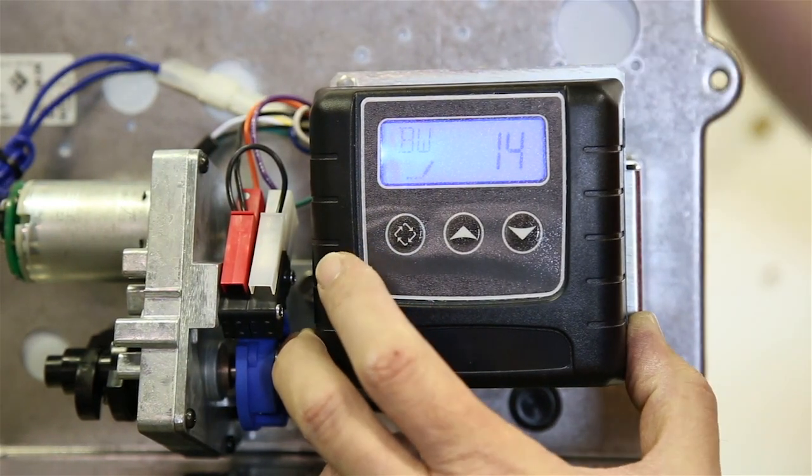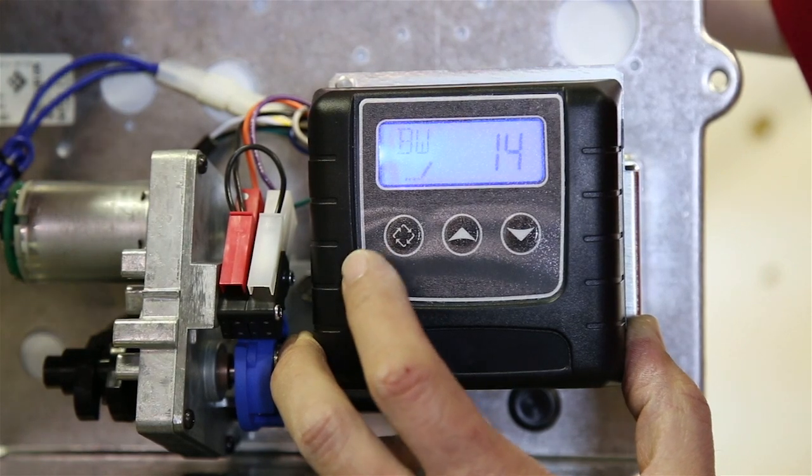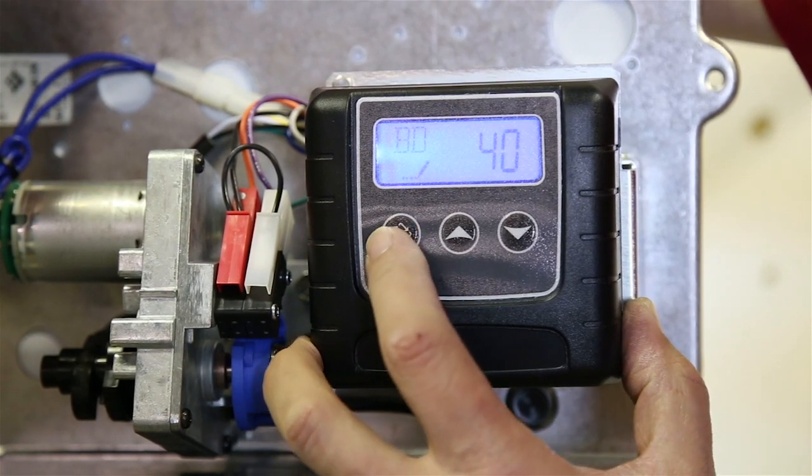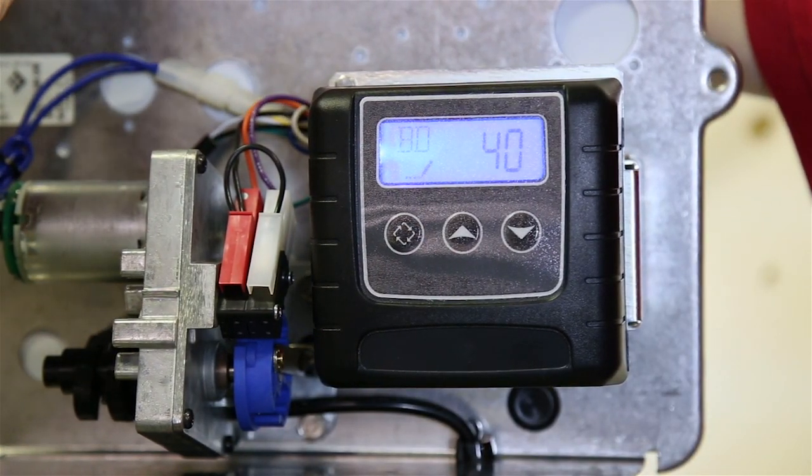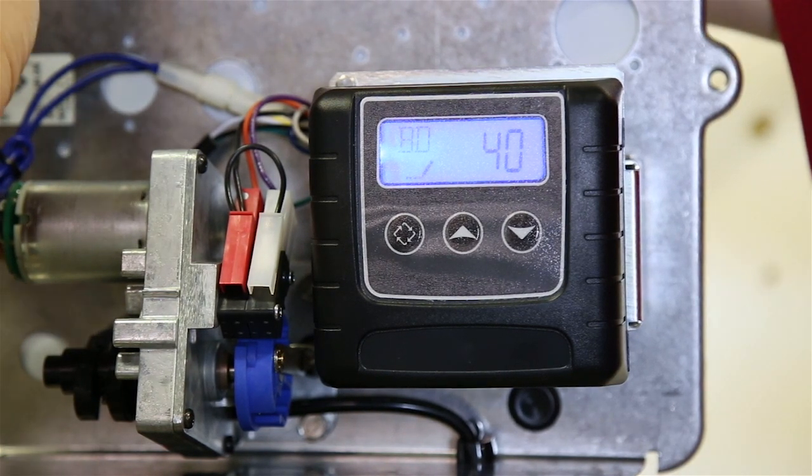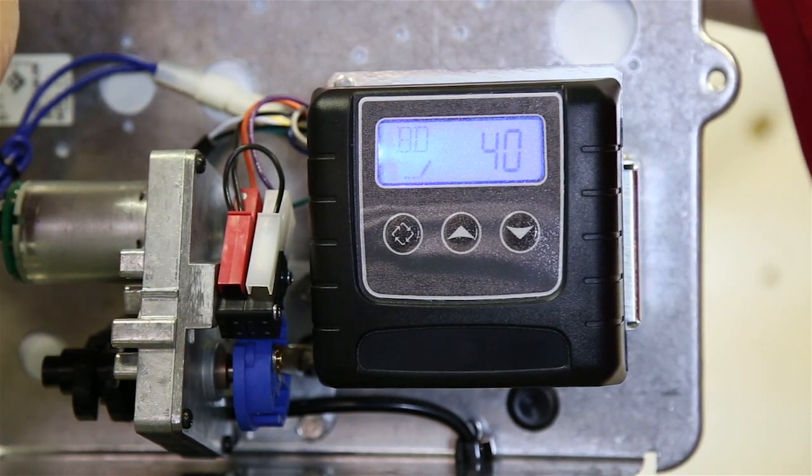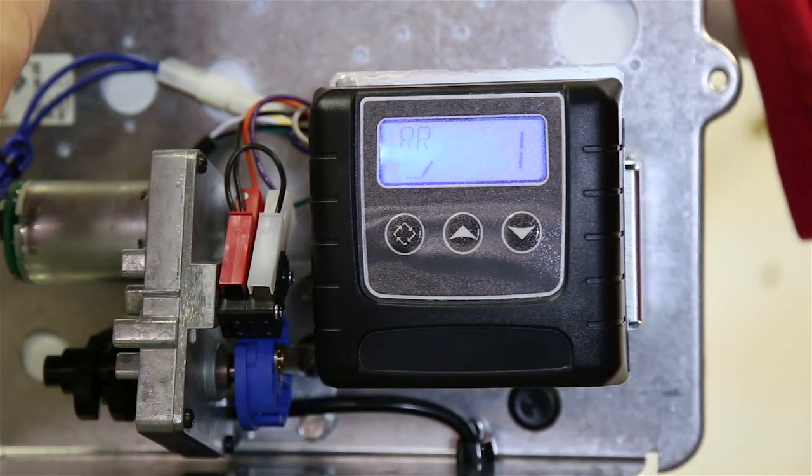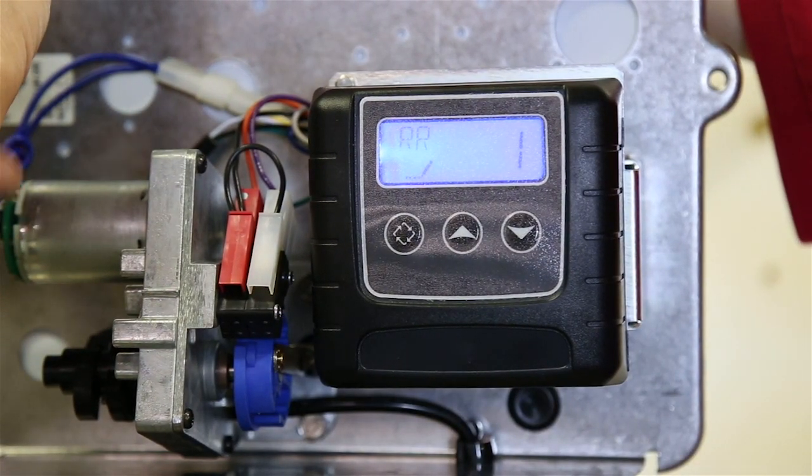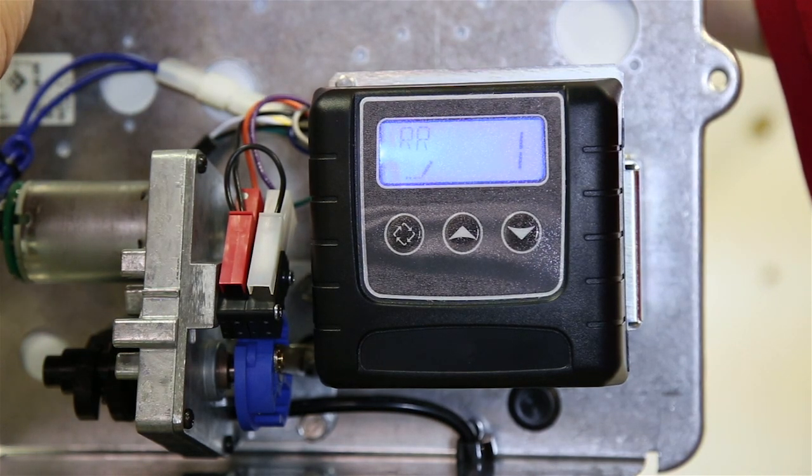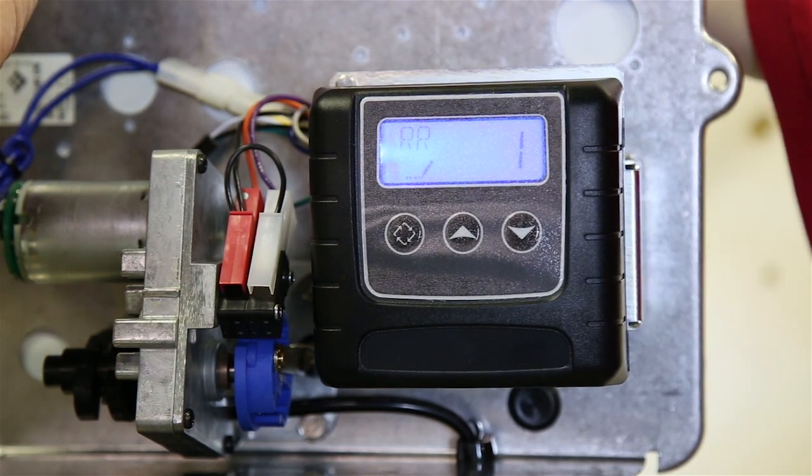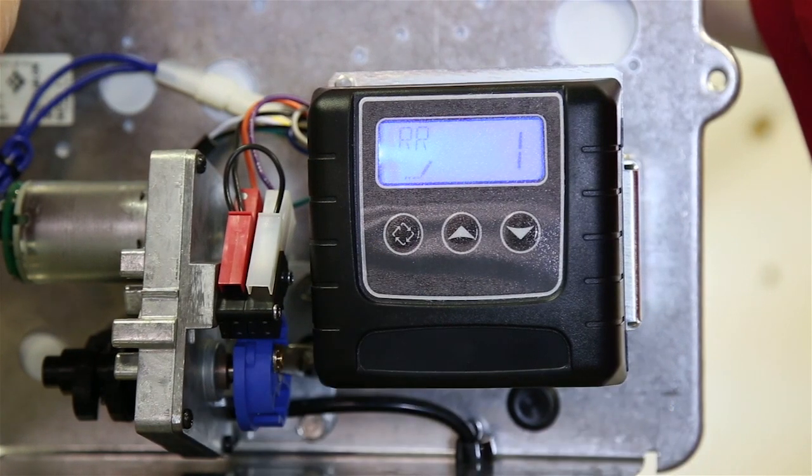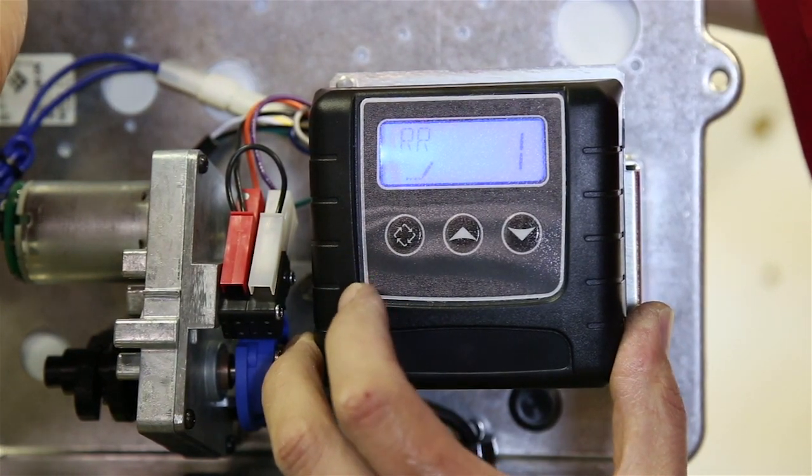Now the next parameter is called the backwash parameter. That's when we're backwashing the contaminants we collected out of here. It should be set on 14 minutes. This next one is called brine draw, but instead of drawing brine, this particular unit is drawing ambient air to oxidize the contamination. So this particular setting should be set on 40. Now the next one is considered a rapid rinse. We really don't want to rinse this because we don't want to deplete the air pocket to rinse. So it's set on one minute, which is the lowest setting that we can put in for rapid rinse.